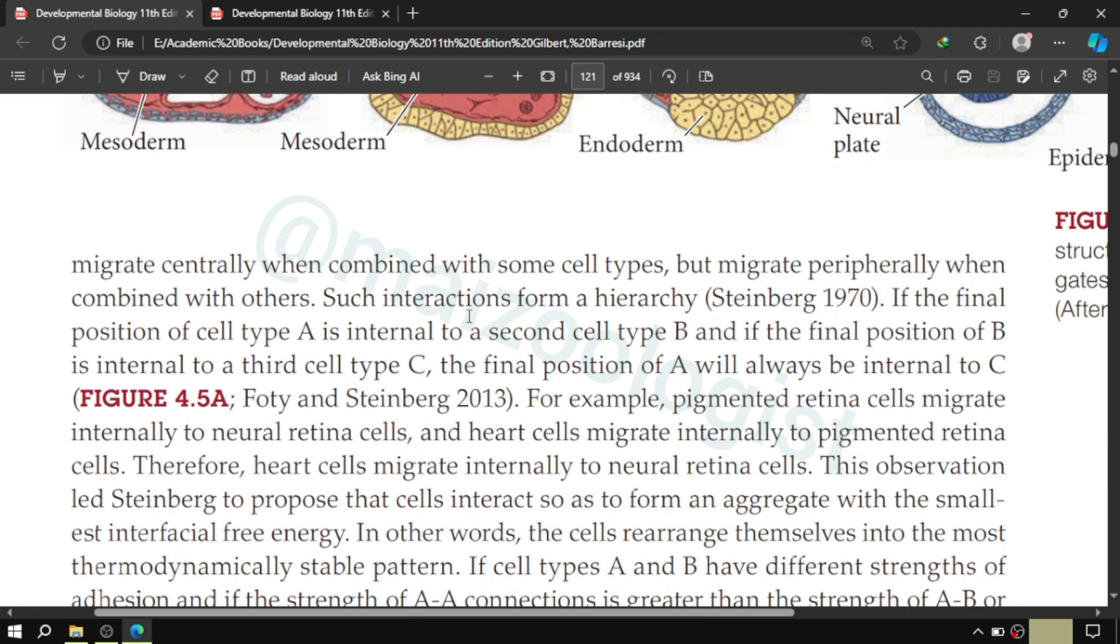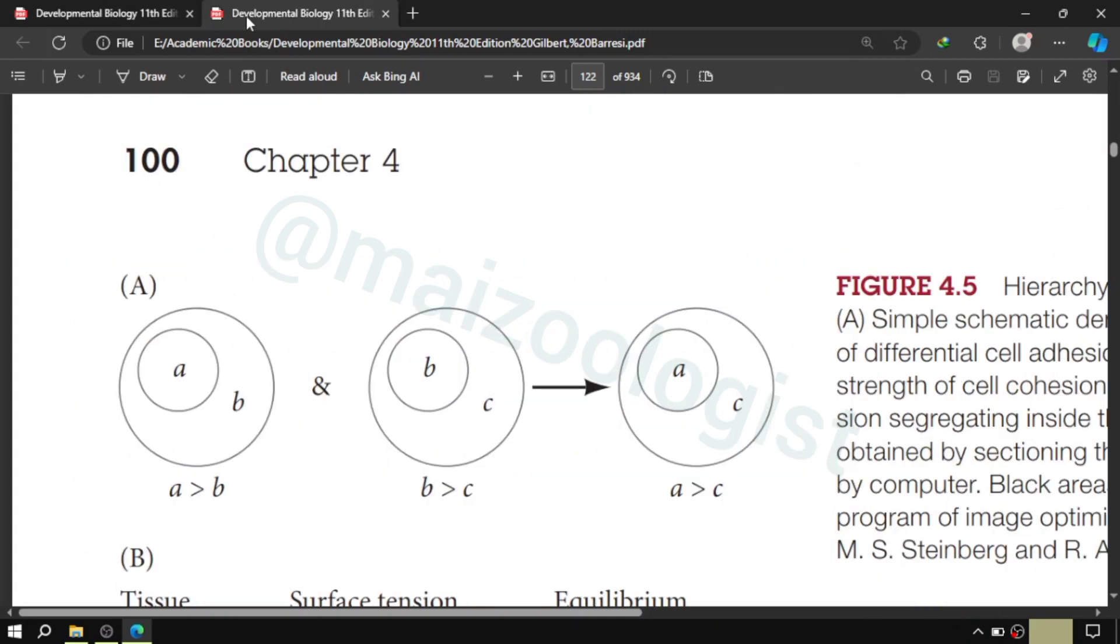migrate centrally when combined with some cell type but migrate peripherally when combined with other cell types, and such interactions thus form a hierarchy. Let's say that if the final position of a cell type A is internal to cell type B and the final position of B cell type is internal to C cell type, it means that A will always be positioned itself internal to C. In simpler words, if A is internal to B and B is internal to C, then A will always be internal to C, and this is what diagrammatically it is represented in the textbook.